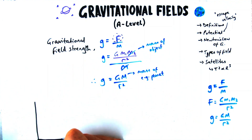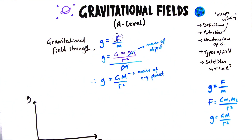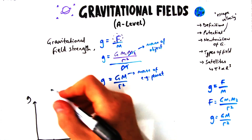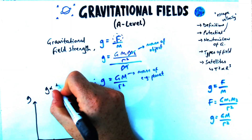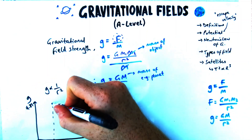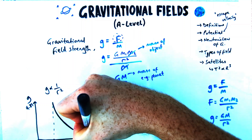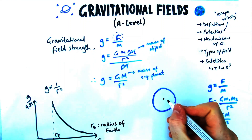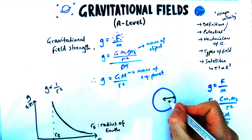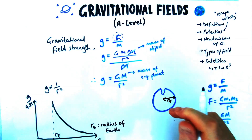Let's look at what a graph of g versus r would look like. Since g is inversely proportional to r², the graph looks like a curve, and the dotted line marks the radius of the Earth — where g is at its maximum value of 9.81. That's the behaviour outside the Earth.